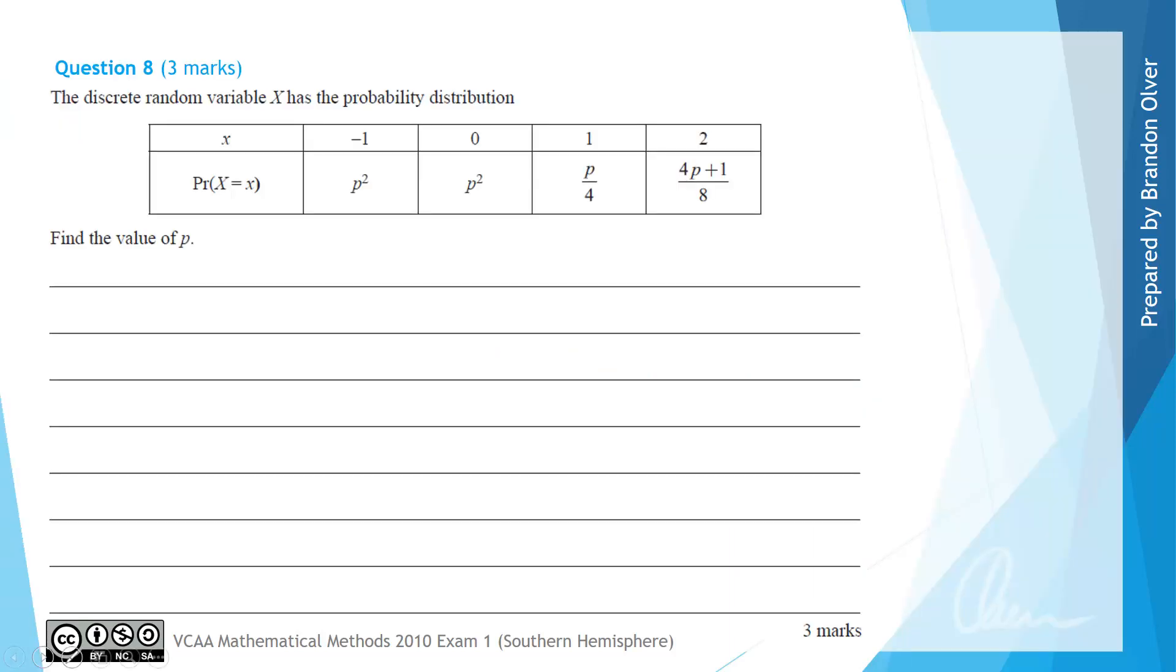For question 8 we're told that the discrete random variable x has the following probability distribution given in the table, and we're asked to find the value of p. We can see that p appears as the probabilities for x equals negative 1 through to x equals 2.